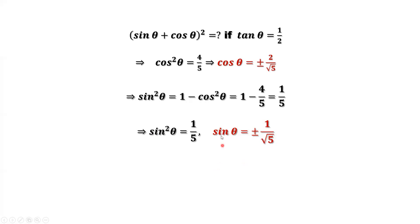We have found cosine theta and sine theta. Because we have positive or negative options for both, we don't know which sign to pick for cosine or sine to plug into this formula to calculate the final result. We need to use the given information again.